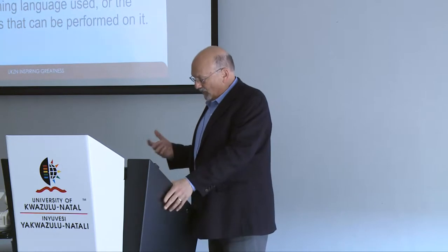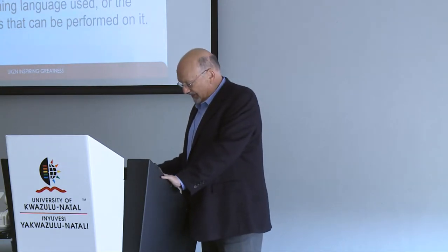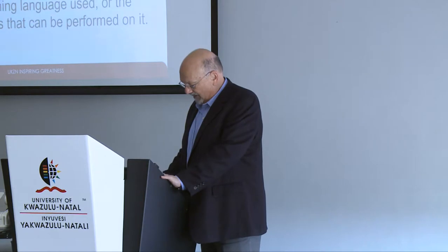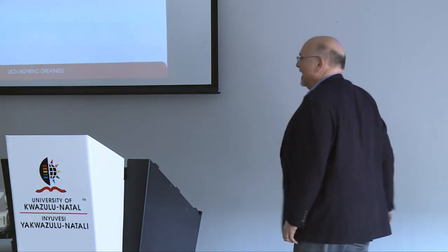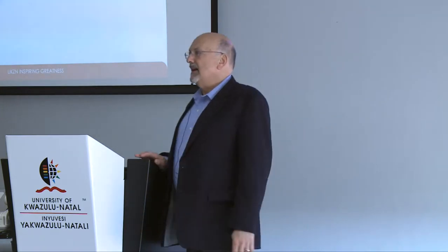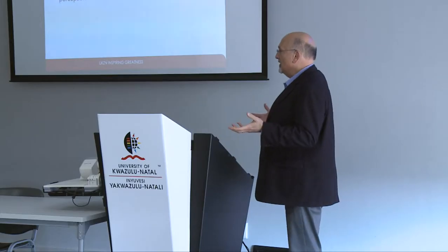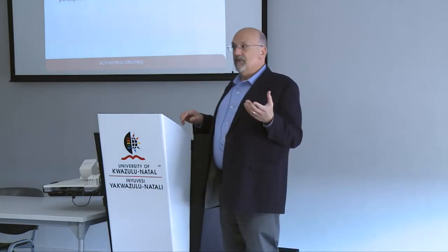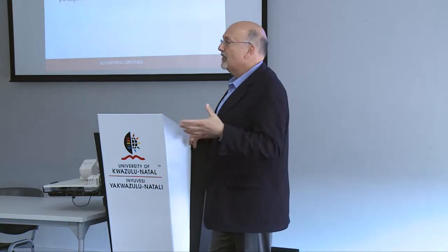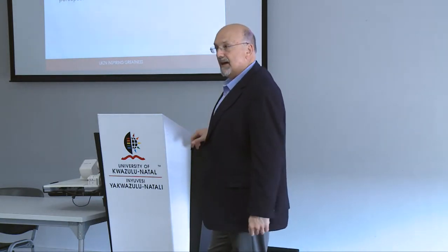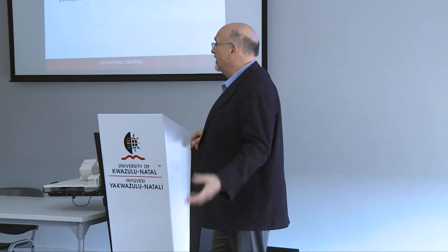We're dividing this into two perspectives: a social science perspective and a computing perspective. In social sciences, they talk about data types using distinctions like primary versus secondary. Primary data sources are when you're going out and collecting data specifically for the analysis or research you have. Secondary is when you're making use of something that already exists.